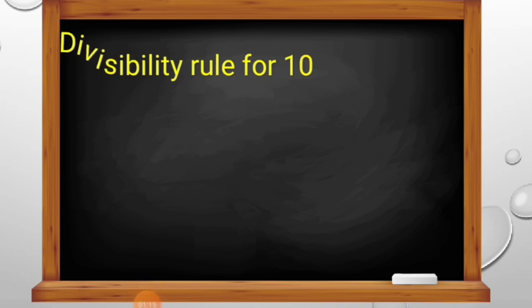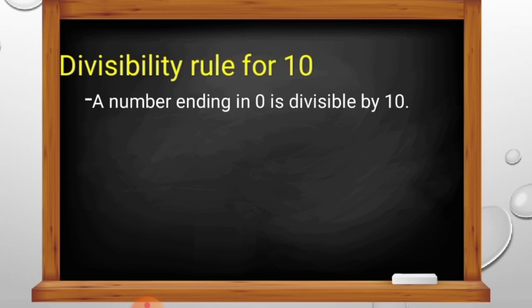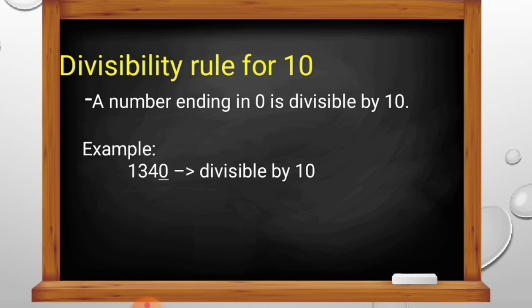And lastly, the divisibility rule for 10. This is the easiest one, because all numbers ending in 0 are divisible by 10. For example, 1,340 — the last digit of 1,340 is 0, therefore 1,340 is divisible by 10. Another example is 670. The last digit of 670 is 0, therefore 670 is divisible by 10.